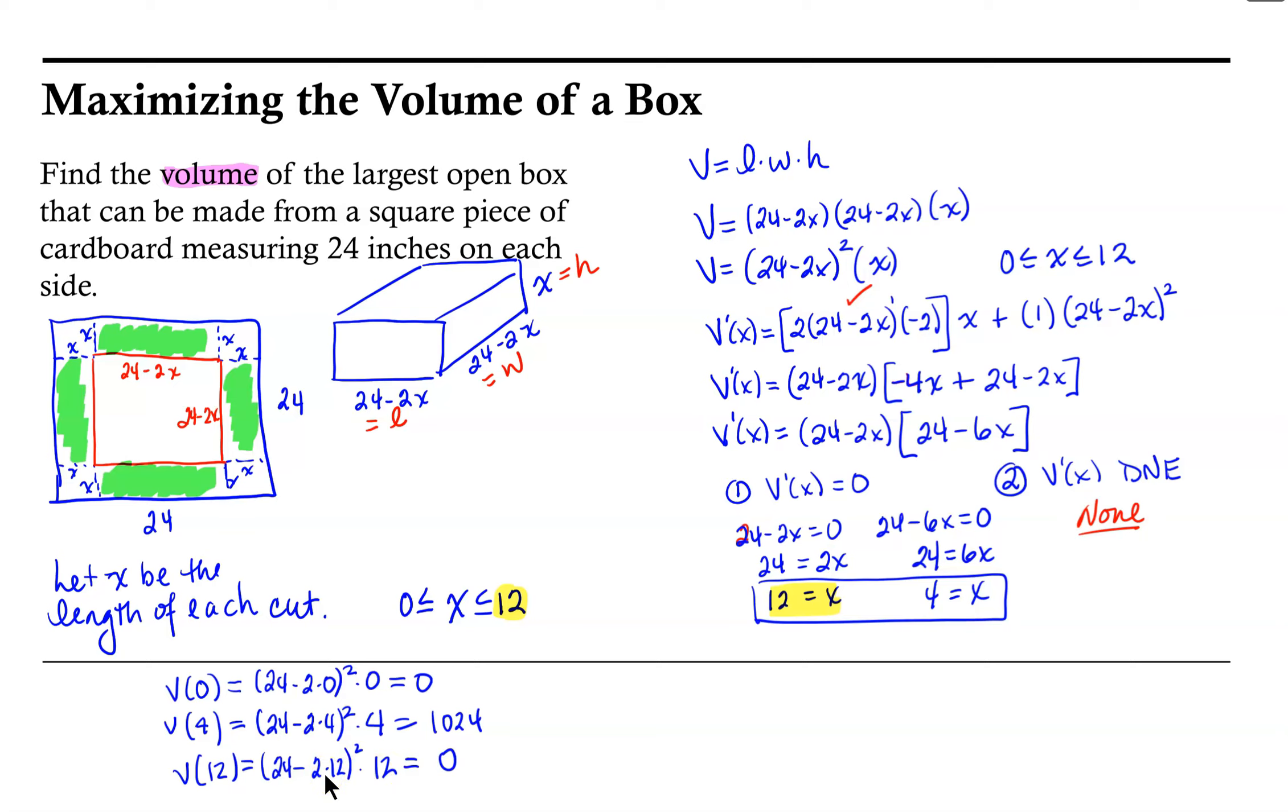So what we can say, and the question asked us, find the volume of the largest open box. So the volume of the largest open box is 1024, our units are inches, so cubic inches, when squares of size 4 inches by 4 inches are cut from the corners of the cardboard.